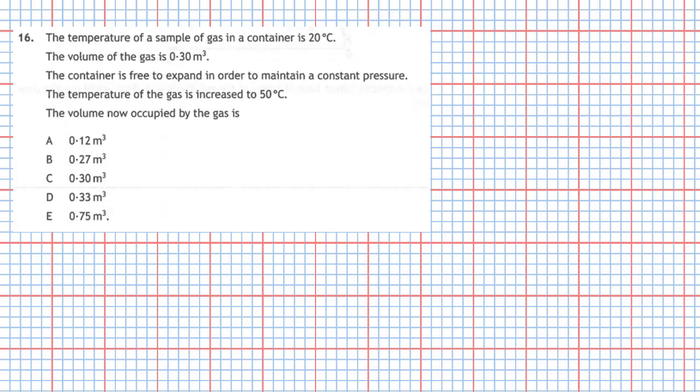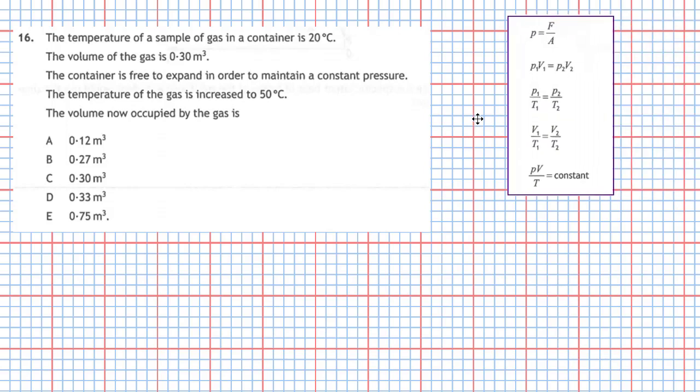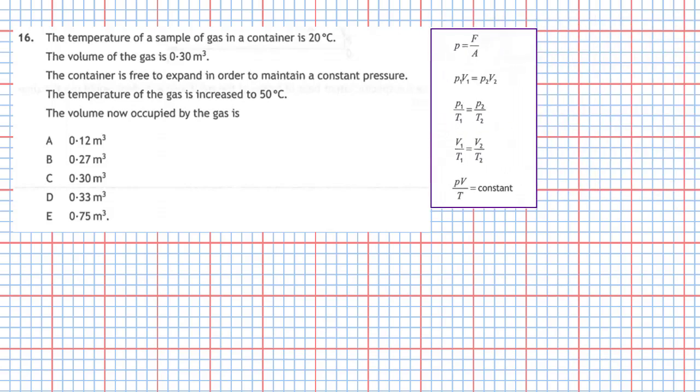The container is free to expand in order to maintain a constant pressure. The temperature of the gas is increased to 50 degrees Celsius. The volume now occupied by the gas is, and you are given your usual 5 choices. Now go straight to the relationship sheet and you can see we have got a whole lot of pressure equations there.